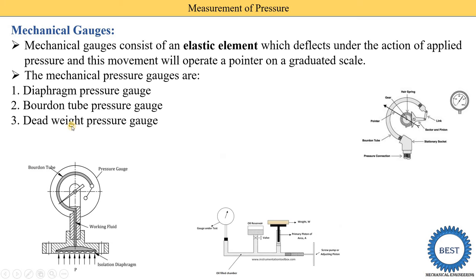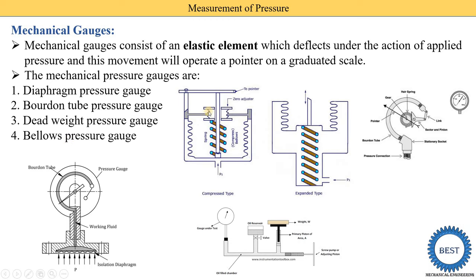The third type is the dead weight pressure gauge, where certain weights are used to measure pressure. The fourth type is the bellow pressure gauge, which uses bellows along with a spring — the spring can be in a compressed or expanded condition. The movement of the bellows is transmitted to a pointer, giving the pressure reading. These are the four types of mechanical gauge.